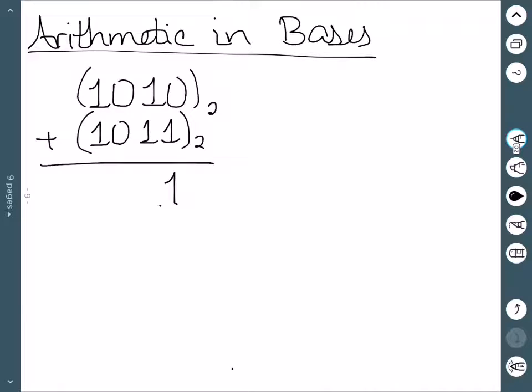0 plus 1 is 1. 1 plus 1 is 2, but 2 actually doesn't mean anything in binary. It means 10. So we have to write down the 0 and carry the 1.